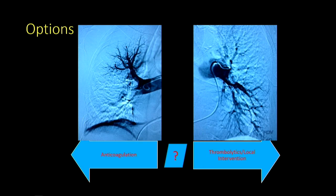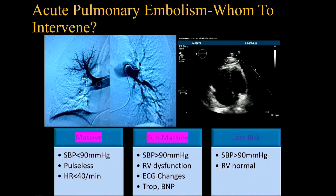One option is anticoagulation treatment, which most patients undergo as their only treatment modality and which should be given to all patients with PE. The second option would be either local intervention with thrombolysis, mechanical embolectomy devices, or systemic IV thrombolysis. Let's tease through how to walk this journey of risk stratifying these patients.